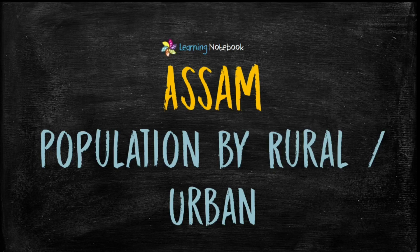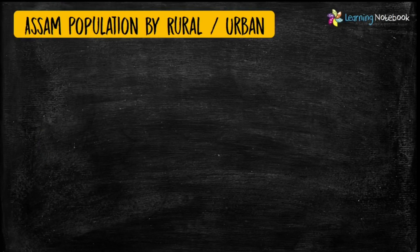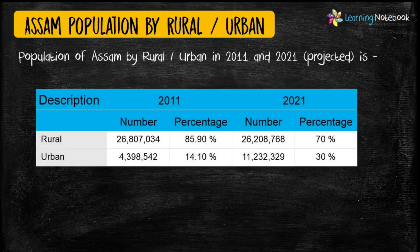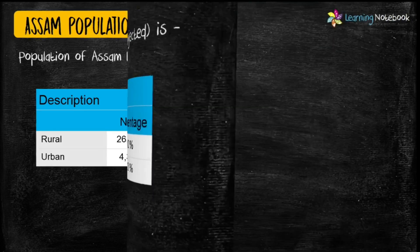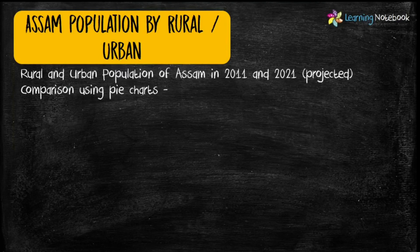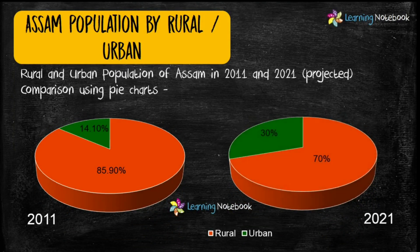The next idea is Assam population by rural and urban. We have used two pie charts to compare the rural and urban population of Assam for two years.